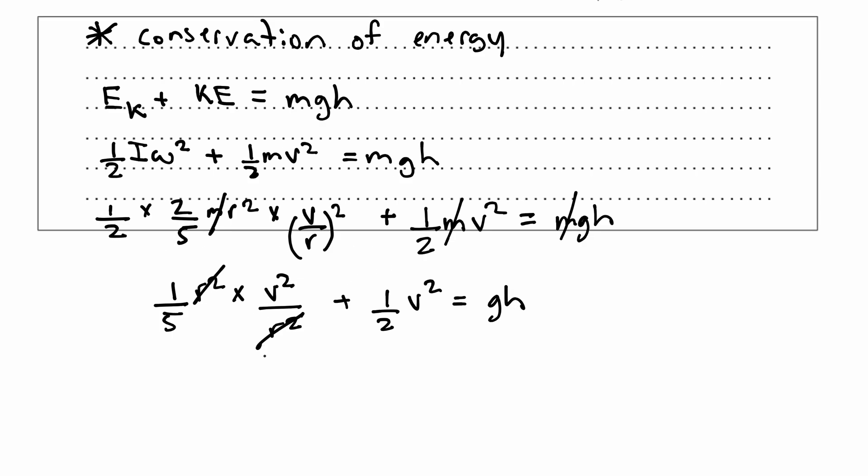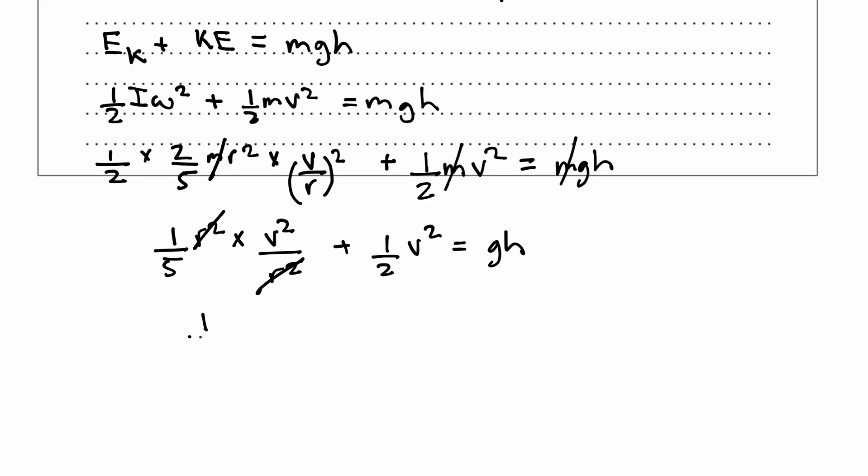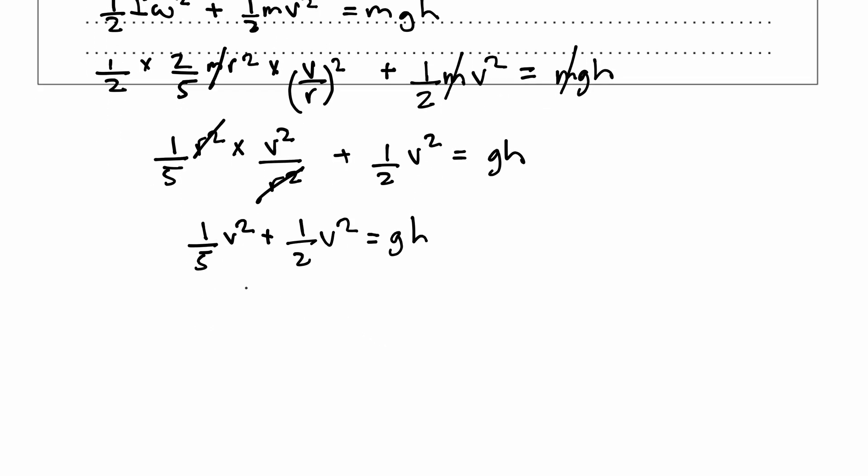r² and r² will cancel. And now I'll be left with 1/5 v² plus ½v² is equal to gh. Now I can add up these two fractions by making a common denominator.